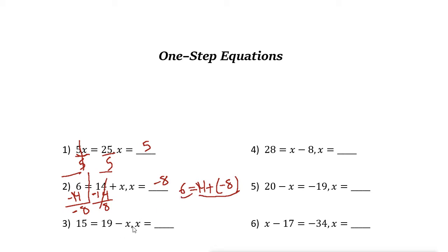Next: 19 minus x = 15. What is x? 19 minus a number gives 15 — that number must be 4, since 19 minus 4 equals 15.